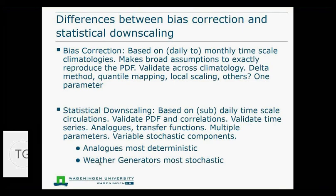It's important to realize the differences between bias correction and statistical downscaling, and which of the two you need depends on your question. Bias correction is often based on daily to monthly timescale climatology. It makes assumptions to exactly reproduce the PDF, the distribution functions. You validate that across the climatology using delta methods, quantile mapping, or local scaling. Statistical downscaling is based on sometimes even sub-daily timescale circulations. It validates the distribution functions and correlations. You can use weather generators for that.